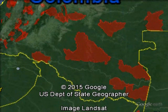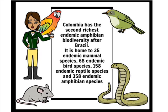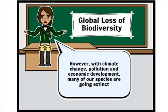Colombia is the second richest in endemic amphibian biodiversity after Brazil. It is home to 35 endemic mammal species, 68 endemic bird species, 158 endemic reptile species, and 358 endemic amphibian species. With global biodiversity loss, however, driven by climate change, pollution, and economic development, many of our species are going extinct.